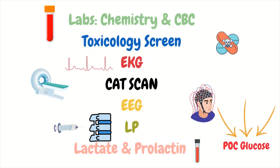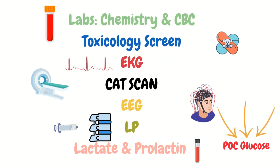An EEG looks for electrical abnormalities within the brain and is extremely useful, especially in status patients, to ensure the patient is truly no longer seizing after our interventions. A lumbar puncture is also useful when looking for infectious causes like meningitis — know that the CT is done first to ensure no intracranial condition is present, because if intracranial pressure is elevated as the result of a lesion, herniation during the LP is a possible complication. Lactate and/or prolactin can also be ordered; if elevated, they help determine that the seizure was a true seizure and not a pseudoseizure. These labs must be drawn immediately after the seizure, ideally within minutes.